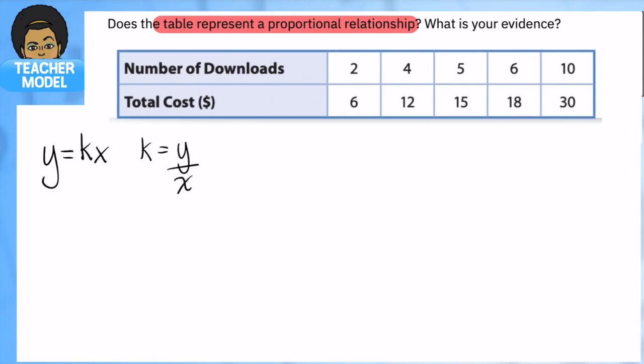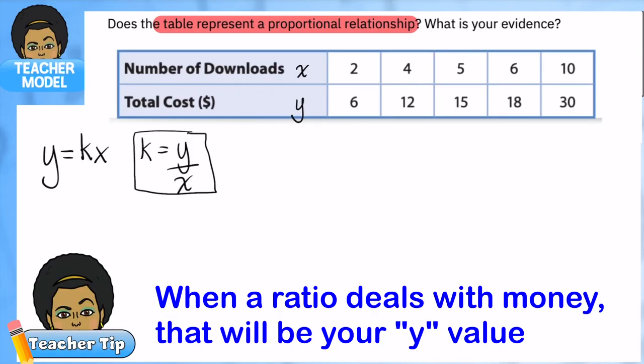We're going to do the same thing here. We call this x and this y, and we're going to calculate k by doing y divided by x.